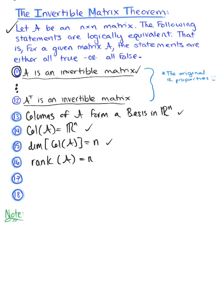And now if the rank of matrix A is equal to n, then we know that the null space of matrix A is null or equal to the zero vector space.